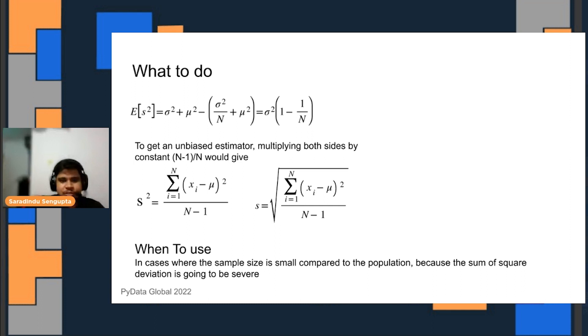The next part is when to use it. As a thumb rule, if the sample size is quite small compared to the population, that is when the sum of squares deviation would be quite severe. In those scenarios, it can be quite easily visible that the estimation for the standard deviation and variance for that sample is going to be quite biased.